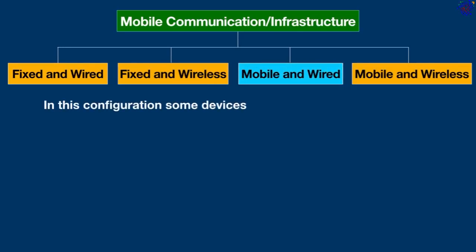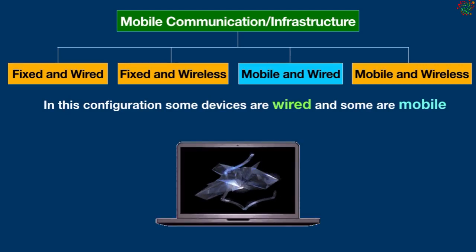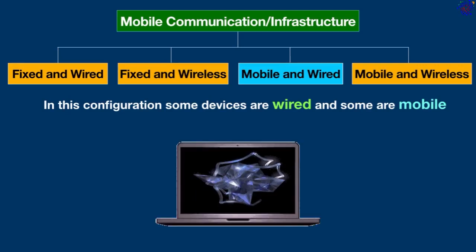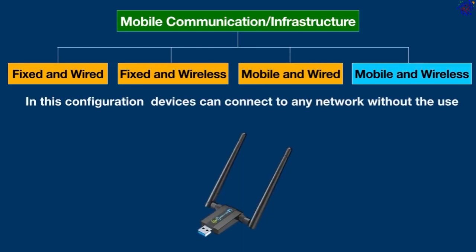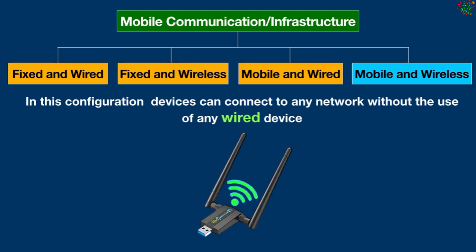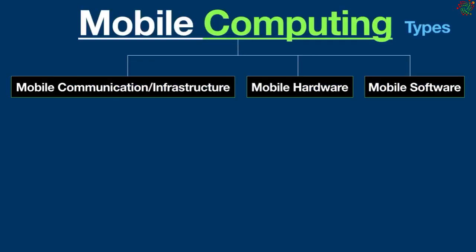Mobile and wired: in this configuration, some devices are wired and some are mobile, and they all together make communication with other devices — for example, laptops. Mobile and wireless: in this configuration, devices can connect to any network without the use of any wired device, and they can also communicate with each other irrespective of their position — for example, a Wi-Fi dongle.